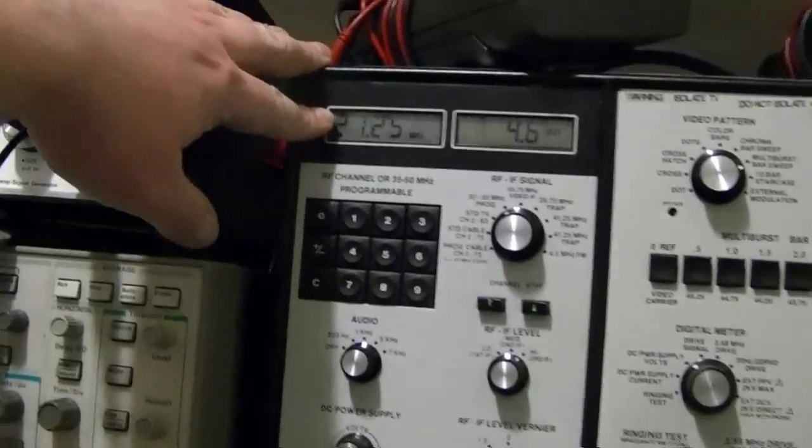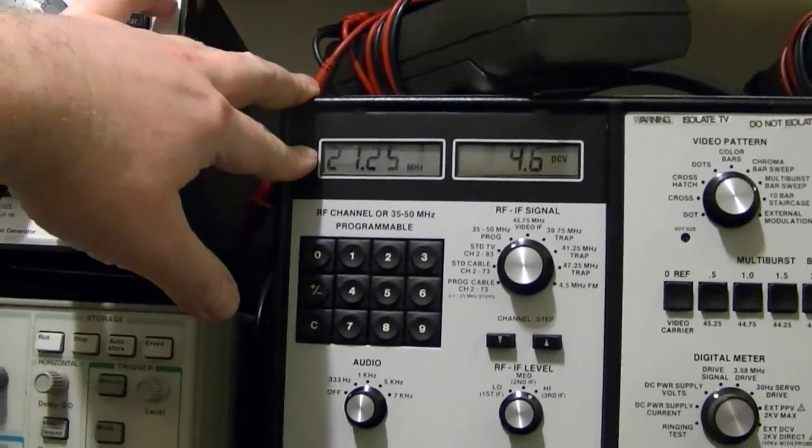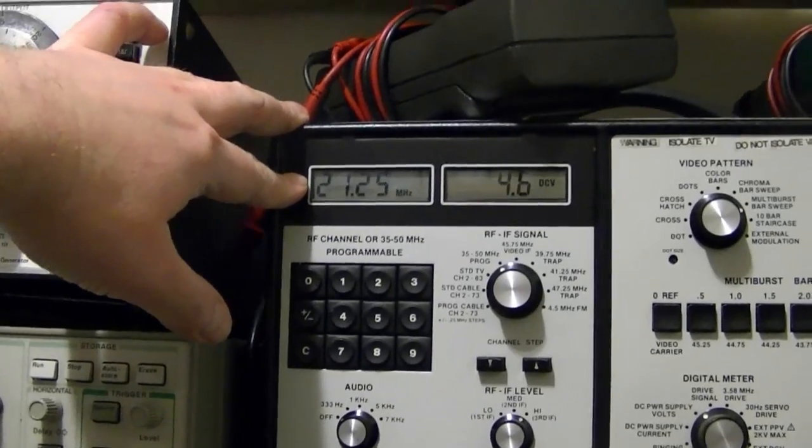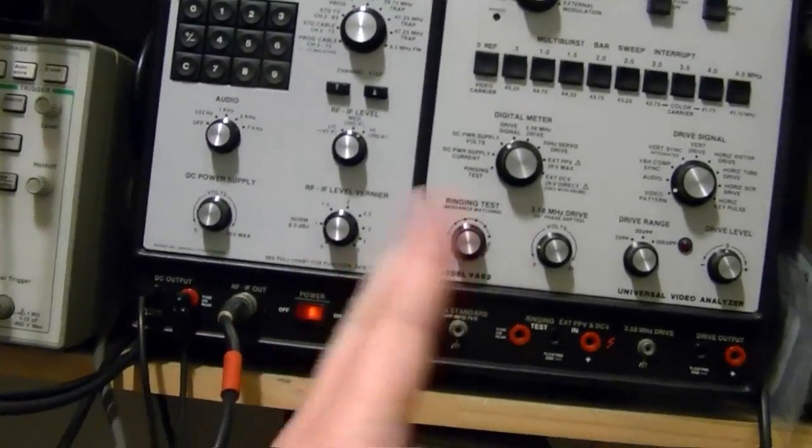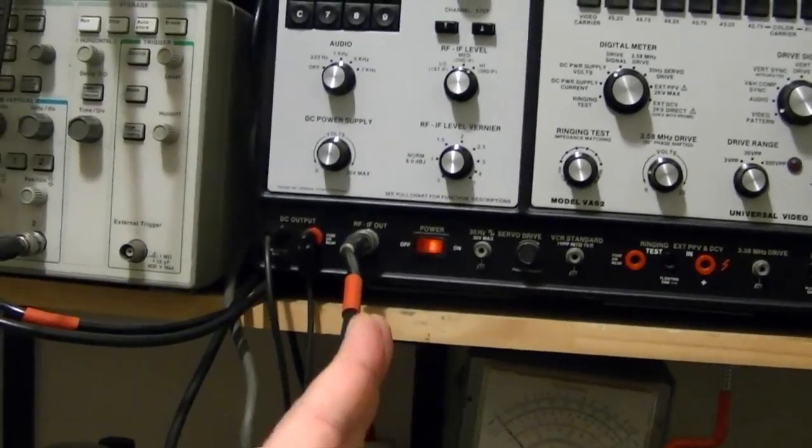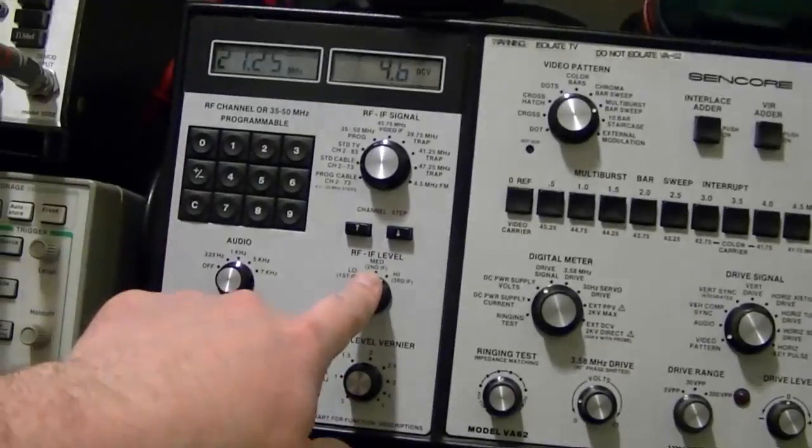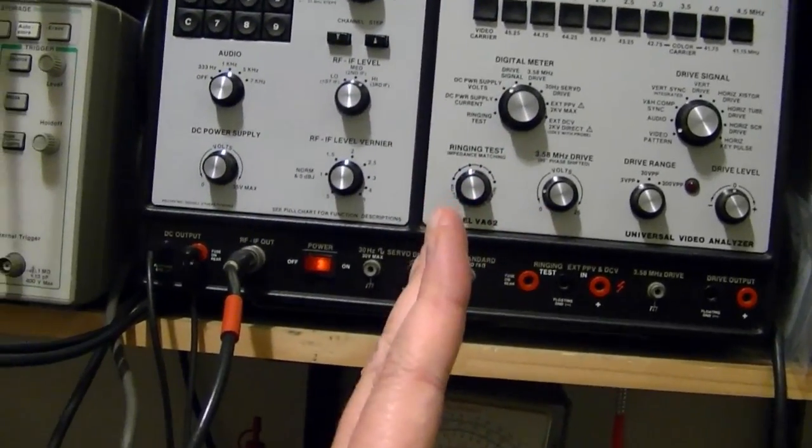Except what I then did is at 21.25, the audio carrier, I went to 21.00 and then I went to 21.5 which should have swung the needle negative and positive. And it just barely moved. So I cranked up the output level, put it on attenuator on high, cranked it up. And it moved but still just barely to either side.